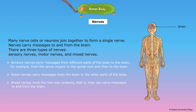Many nerve cells or neurons join together to form a single nerve. Nerves carry messages to and from the brain. There are three types of nerves: sensory nerves, motor nerves and mixed nerves. Sensory nerves carry messages from different parts of the body to the brain — for example, from the sense organs to the spinal cord and then to the brain. Motor nerves carry messages from the brain to the other parts of the body. Mixed nerves work like two-way systems; that is, they can carry messages to and from the brain.